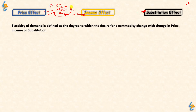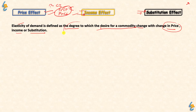Elasticity of Demand is defined as the degree to which the desire for a commodity — or demand of a commodity — changes with change in price, income, and substitution. Elasticity of Demand tells us that for any commodity, demand will change to some degree with change in price, income, and substitution.